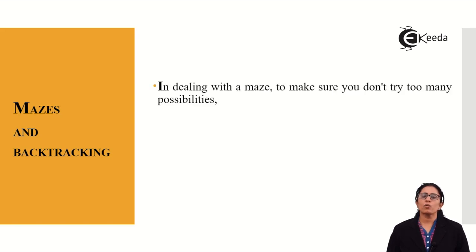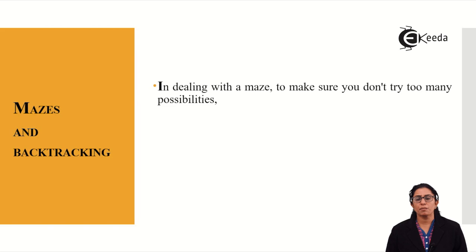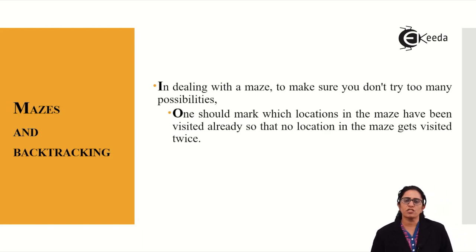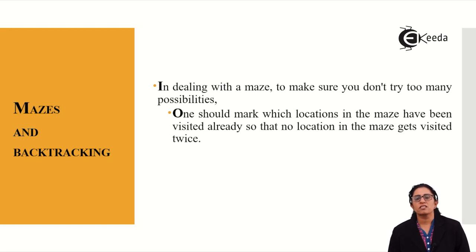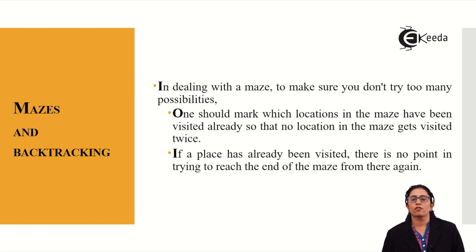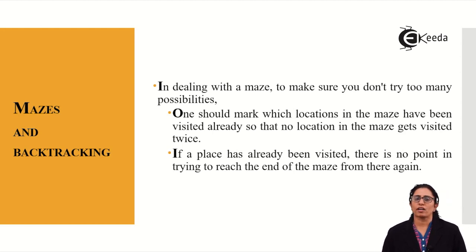When dealing with a maze, make sure not to try too many possibilities. Design the algorithm so that your first choice leads to a possible solution. Also, make a mark of all locations in the maze that have already been visited so no location gets revisited twice. Store the junctions and track your solutions. If a place is already visited, there's no point trying to reach the end through it again. This is how we conclude that the maze solution gives us the perfect backtracking problem. Thank you.